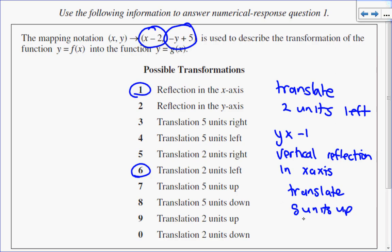In terms of correct order, when following mapping notation, reflections and stretches come first, translations come last. So I'm going to write this in the order of reflection first, then translation.